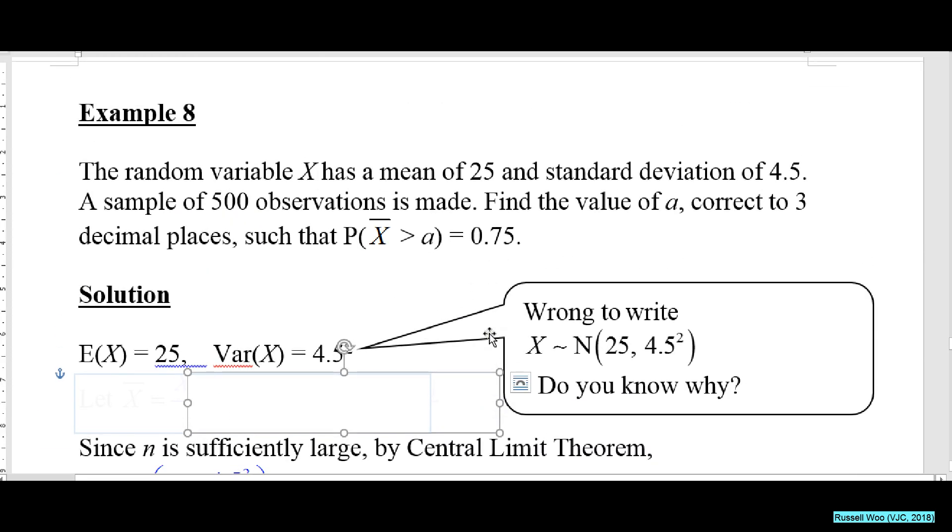Example 8 says the random variable X has a mean of 25 and standard deviation of 4.5. Again I stress, it's wrong to write this. A sample of 500 observations is made. Find the value of a such that probability X̄ greater than a is 0.75.